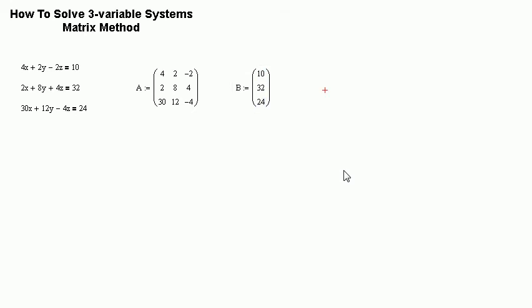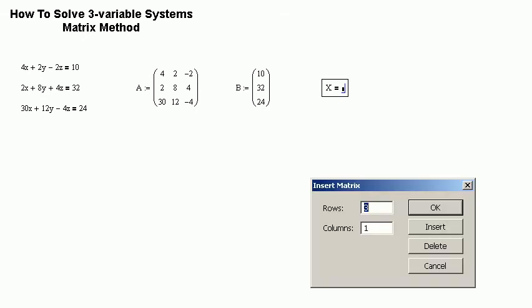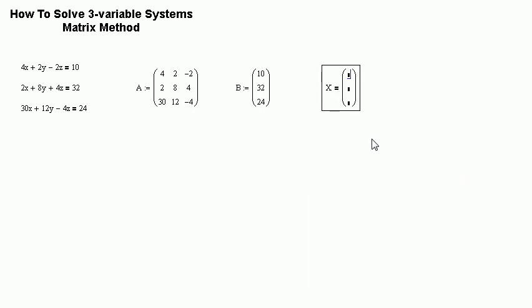The final matrix is the coefficient matrix. It is equal to, it's not equal to, it takes the form of x, y, and z. Coefficient matrix, constant matrix, and variable matrix.